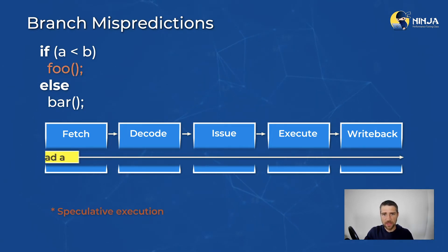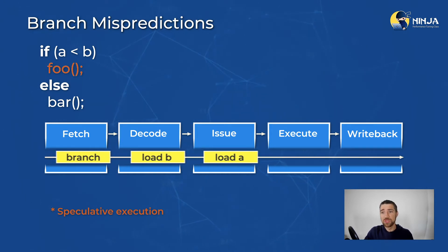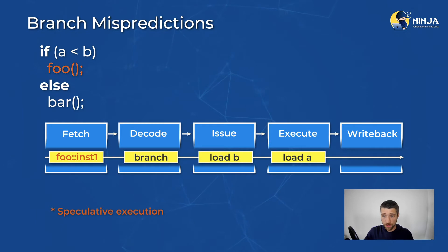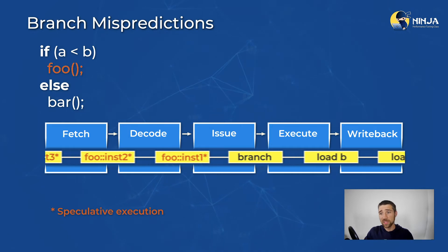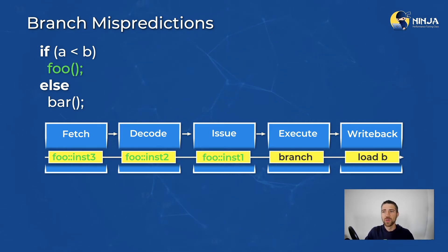So we have the same code again. But with speculative execution, when we see a branch, we try to guess what the result of that branch will be. Let's suppose we predicted that it will be foo. We don't know for sure — it is just our prediction. So we keep track of all the instructions we execute speculatively, and we keep on executing until we know the result of the branch. Suppose our prediction was correct — we simply keep on running like nothing happened and enjoy the three cycles we saved.